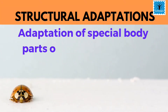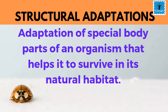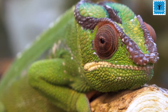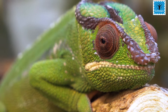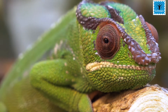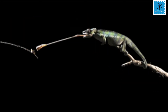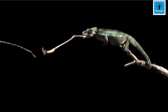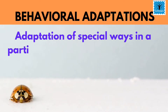Structural adaptation means the adaptation of special body parts of an organism which helps them to survive in its natural habitat. For example, in the case of a chameleon, it has camera-like eyes which help them to focus on their prey, and it has a long tongue so it can launch its tongue like a projectile and catch the prey. In the case of a bear, its body is covered with fur to protect it from extreme cold.